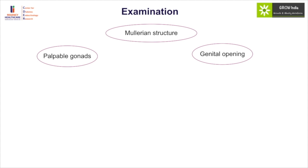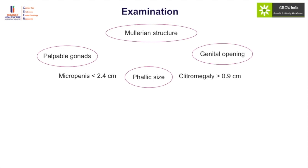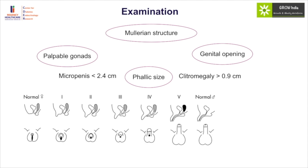Genital openings should be assessed — whether there is a single urogenital opening or two separate openings. Phallic size should be determined using a hard scale by pressing the suprapubic fat toward the pubic symphysis on the dorsal aspect, stretching the penis to the point of resistance. If the phallic structure size is less than 2 to 2.4 centimeters it is considered micropenis, while a clitoral size more than 1 centimeter is considered clitoromegaly.